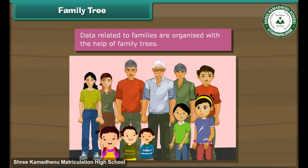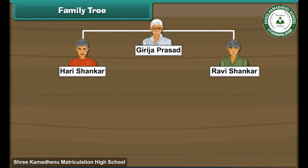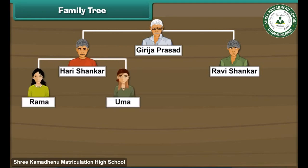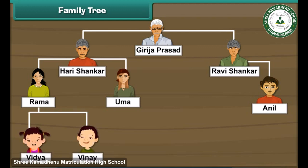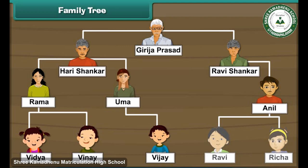Let us represent Ravi's family with the help of a family tree. The eldest member is Ravi's great-grandfather, Girija Prasad. He has two sons, Hari Shankar and Ravi Shankar. Hari Shankar has two daughters, Rama and Uma. Ravi Shankar has one son, Anil. Rama has a daughter, Vidya, and a son, Vinay, while Uma has a son, Vijay. Anil has a son, Ravi, and a daughter, Richa. The family tree of Ravi's joint family is now complete.